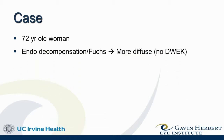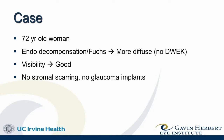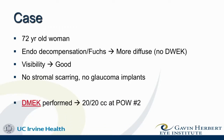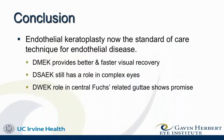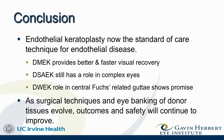Let's go back to our case: the 72-year-old woman with endothelial decompensation after cataract surgery. The decompensation was more diffuse, so she was probably not a good candidate for Descemet's stripping only. Visibility was good, no stromal scarring, no glaucoma implants — so this patient had DMEK and achieved 20/20 vision at post-op week two. In conclusion, endothelial keratoplasty is now the standard of care for endothelial disease. DMEK offers fantastic visual recovery. DSEK still has a role in complex cases. DWEK for central Fuchs-related gutae shows great promise. As surgical techniques and eye banking evolve, outcomes and safety continue to improve — it's a fun time to be a corneal surgeon.